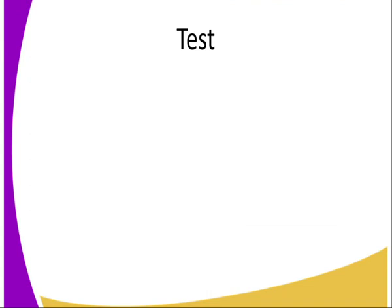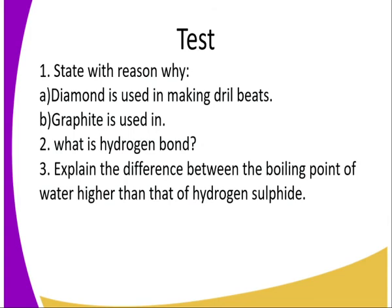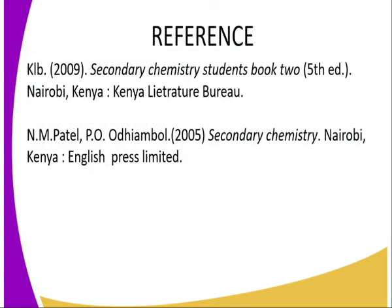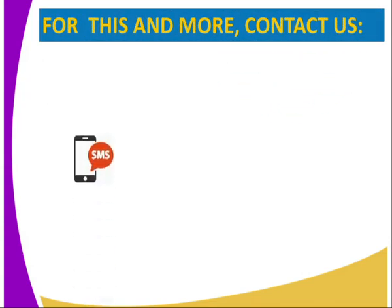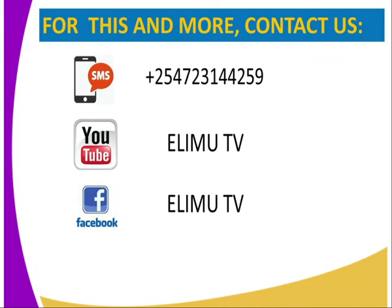Did we get to understand some of the goals of this lesson? Let's try to answer the following questions: State with reason why diamond is used in making drill bits. Why is graphite used in electrical conductivity? What is a hydrogen bond? Explain the difference between the boiling point of water and that of hydrogen sulfide, yet both of them are molecular substances. Refer to the textbook for more information, or give us a text through the number on your screen, or visit our YouTube page at Elimu TV as well as Facebook, or give us a tweet at Elimu TV underscore KE.